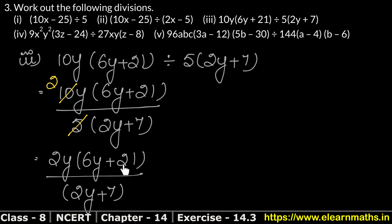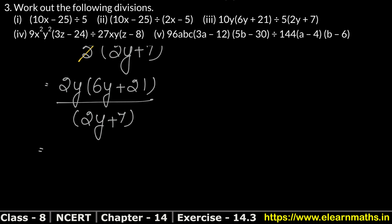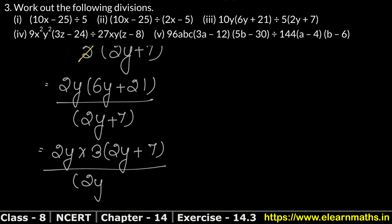Now let's see if there is something common in 6 and 21. In the 3 times table, both 6 and 21 appear, so we take 3 as common. We have 2y multiplied by 3(2y plus 7) upon (2y plus 7). The bracket (2y plus 7) cancels. So 3 twos are 6 and we multiply 3 by 2y, giving us 6y as the answer.